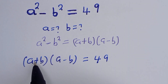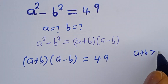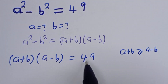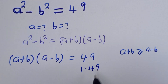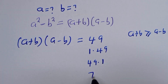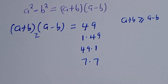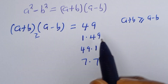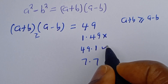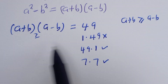From here we have A plus B multiplied by A minus B. Now, A plus B is greater than or equal to A minus B. Let's see: 49 is 1 multiplied by 49, then 49 multiplied by 1, then 7 multiplied by 7. Since A plus B is greater than or equal to A minus B — 1 is less than 49, so that's cancelled out. Then 49 is greater than 1, this is valid. Then 7 equals 7, this is also valid. We have 2 cases to be considered here.